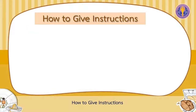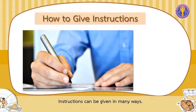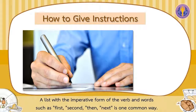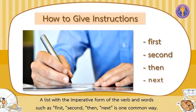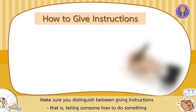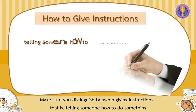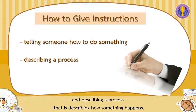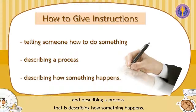How to give instructions? Instructions can be given in many ways. Instructions are often given with the imperative form of the verb and words such as first, second, then, next — this is one common way. Continuous text using the present tense form of the verb with 'you' and 'choose' is another common way.